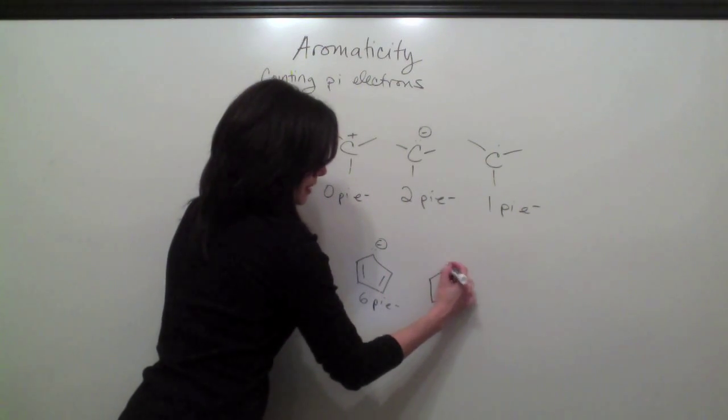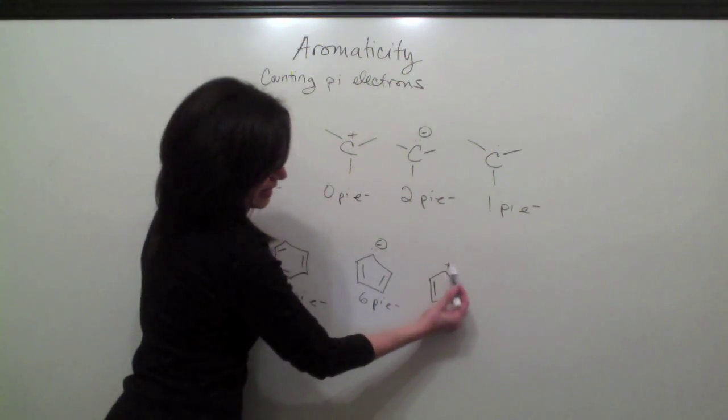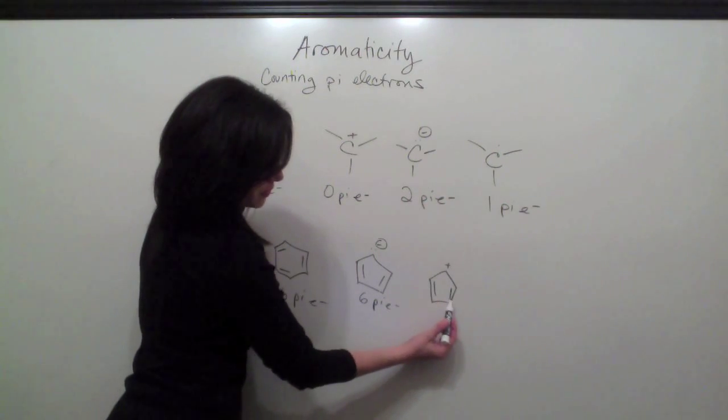That same compound, but with a carbocation. The carbocation counts as zero. So there's just a total of one, two, three, four.